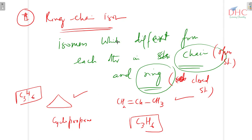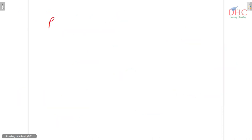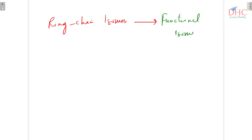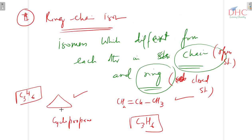An important point: ring chain isomers are also functional isomers. For example, cyclopropane belongs to the alkane category while propene belongs to the alkene category — the class is different, the functional group is different. Since they have the same molecular formula but belong to different classes, they are also functional isomers. That's why ring chain isomers are always functional isomers too.